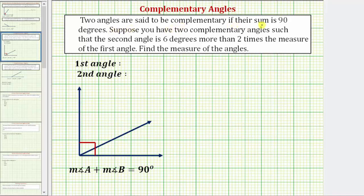Two angles are said to be complementary if their sum is 90 degrees. So if two angles are complementary, when we put the two angles together, they would form a right angle or a 90 degree angle. So this angle and this angle are complementary angles.